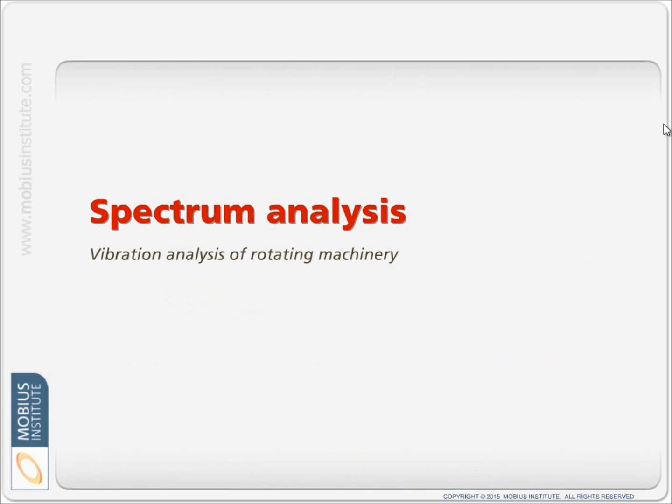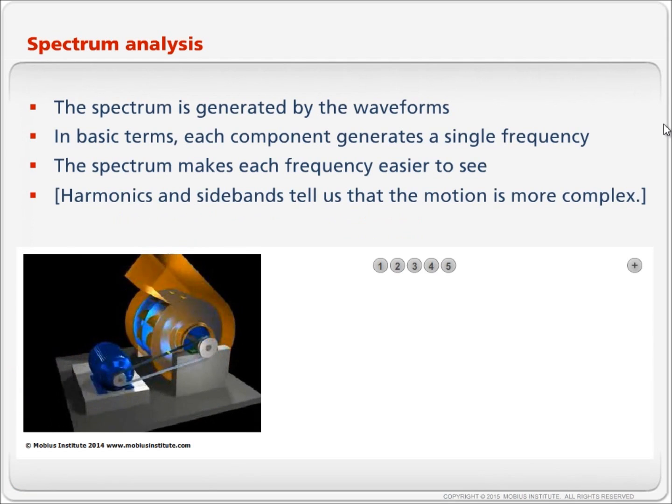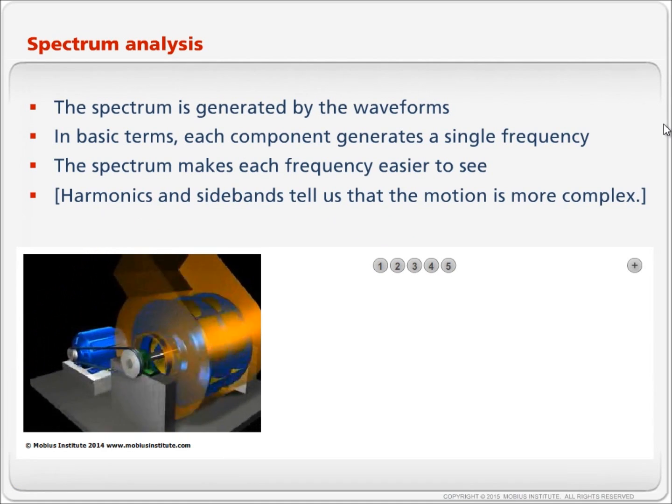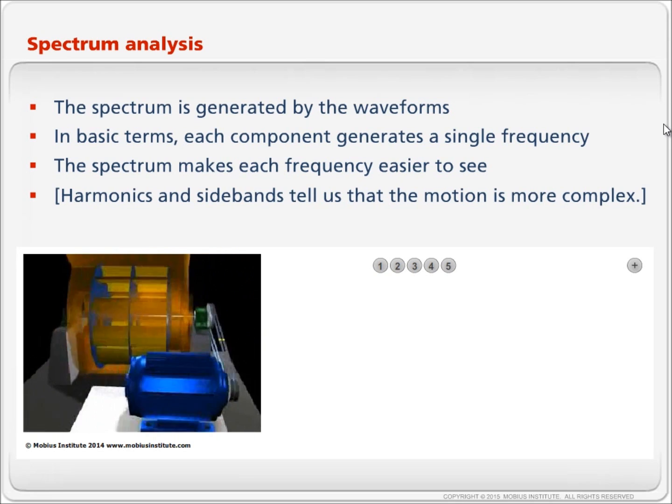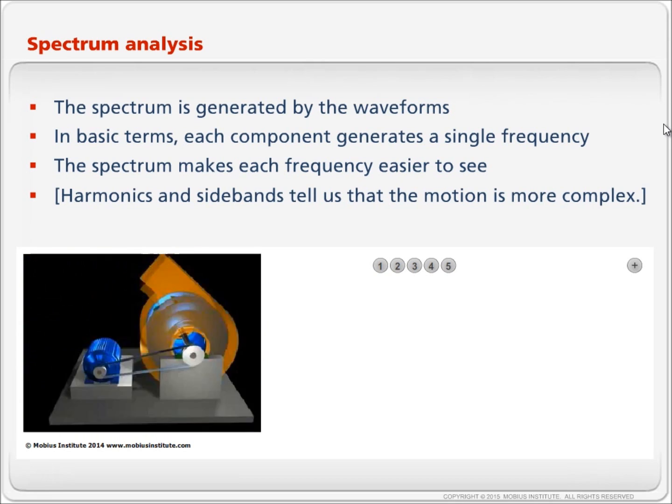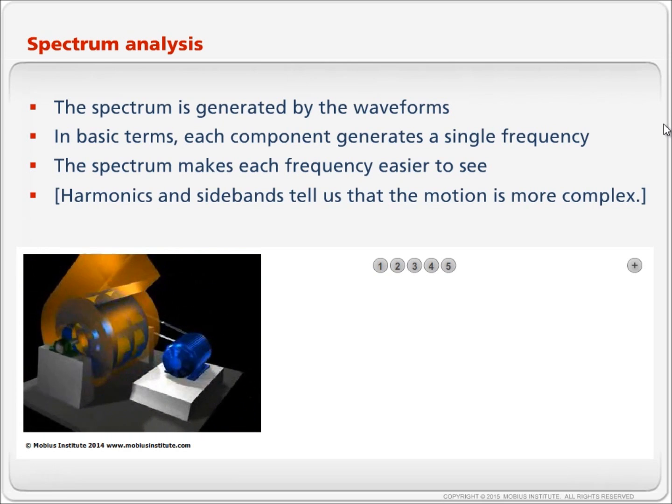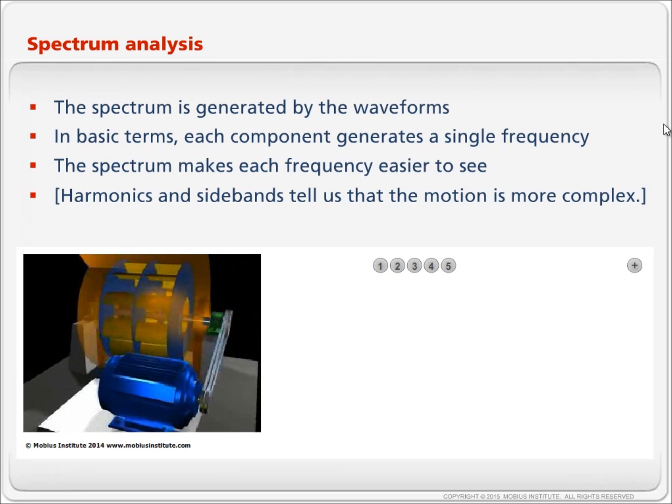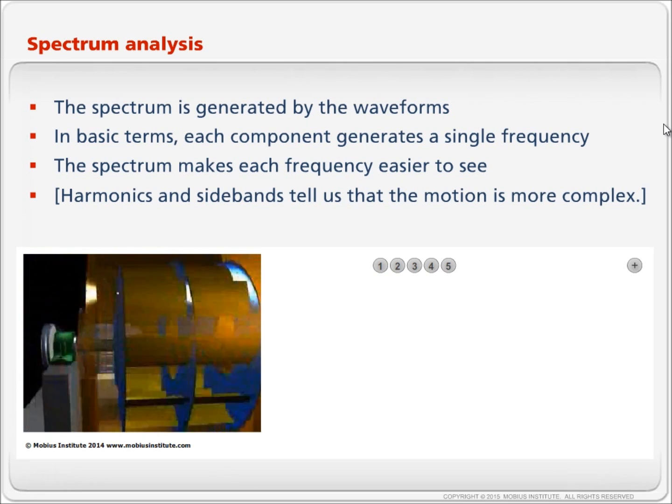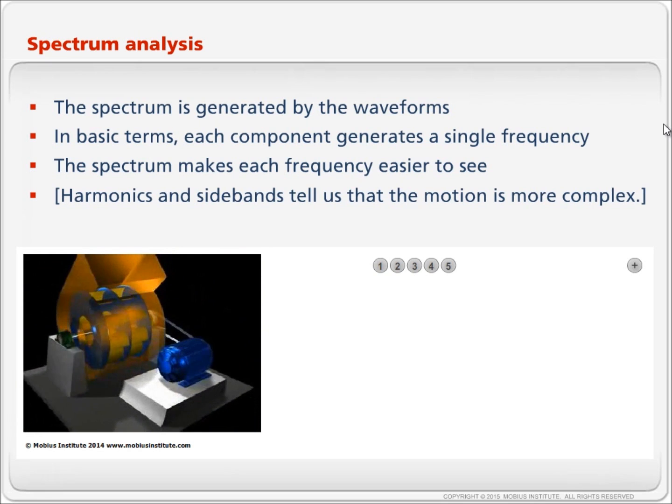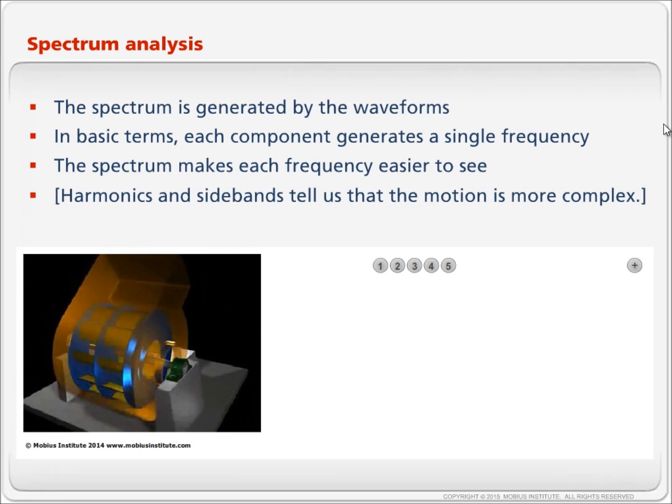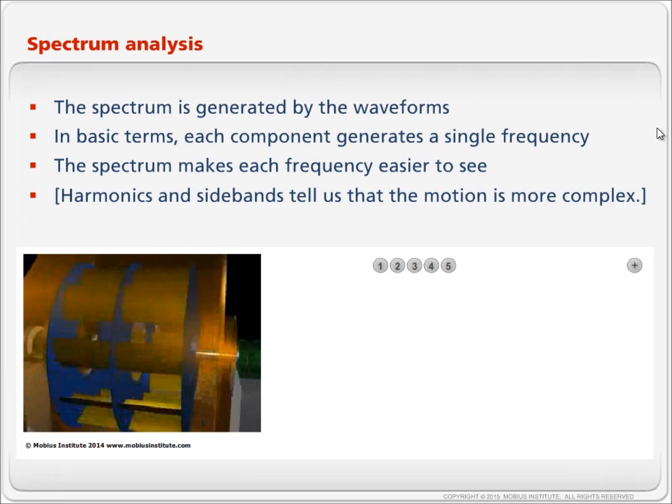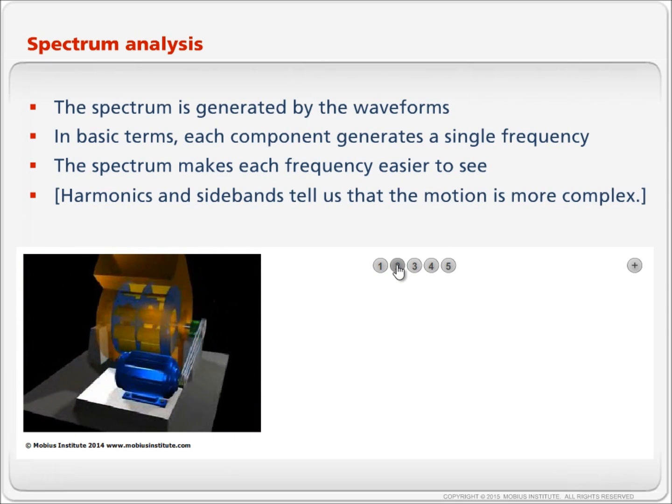So first let's take a quick look at Spectrum Analysis. The spectrum is generated by the time waveforms from the machine. In basic terms, each component in the machine generates a single frequency. The spectrum makes each frequency easier to see. Harmonics and sidebands tell us that the motion within the machine and the forces involved are more complex than simple single frequency vibrations.